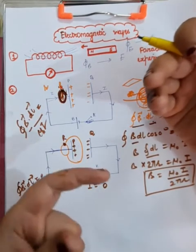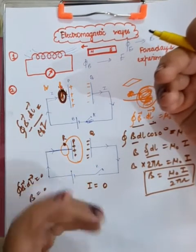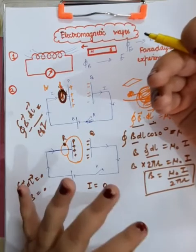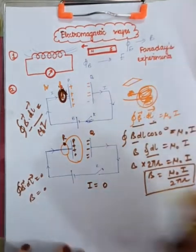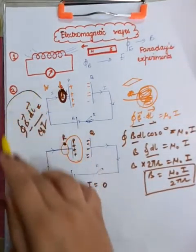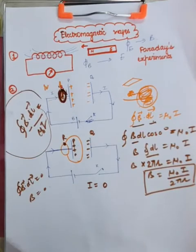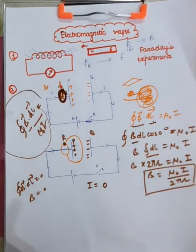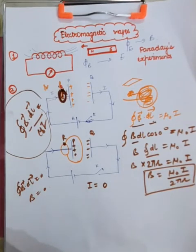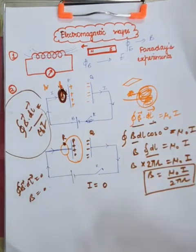This is actually a problematic situation. In this way we say that Ampere's Circuital Law is logically inconsistent — there is some problem with it. I will tell you why that problem arises, but before that I need to tell you some important additional fact.